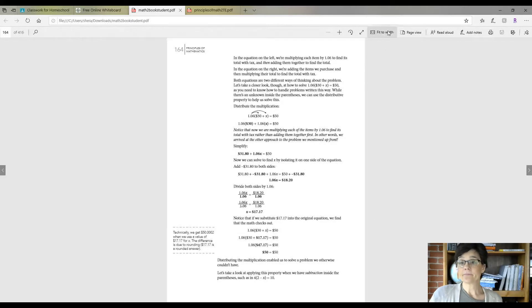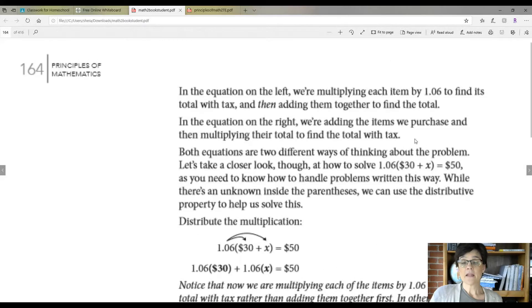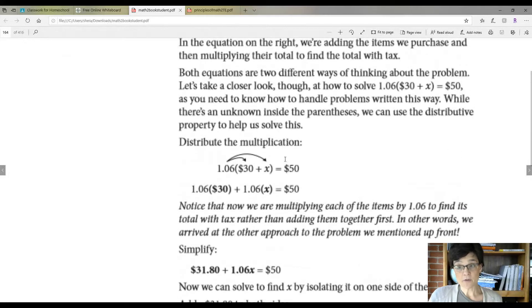Multiplying by 1.06 is the same as finding 100% plus the 6% tax as 100 plus 6% is 106% or 1.06. In the equation on the left, which was the first one that we were talking about, you're just multiplying each item by the tax to find its total with tax, and then you would add them together to find the total.